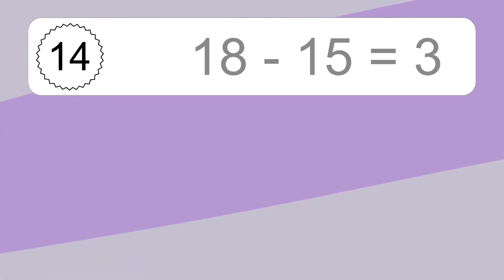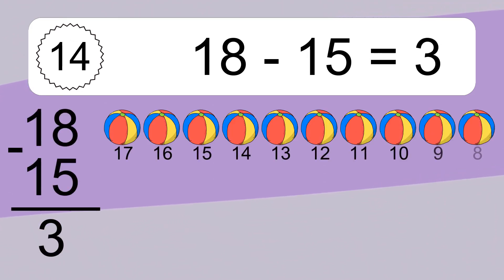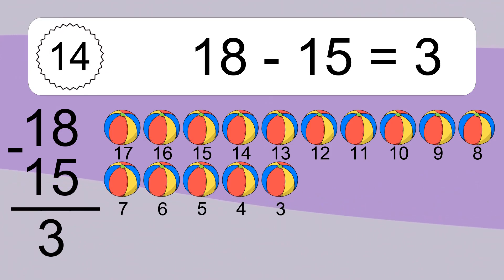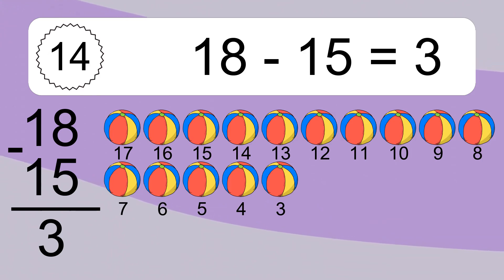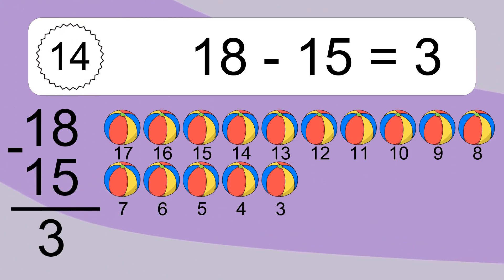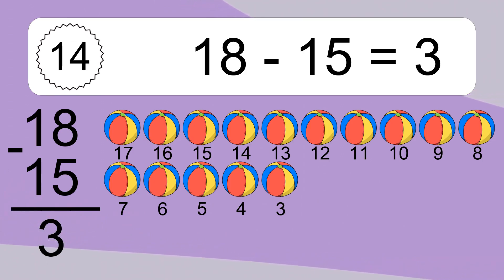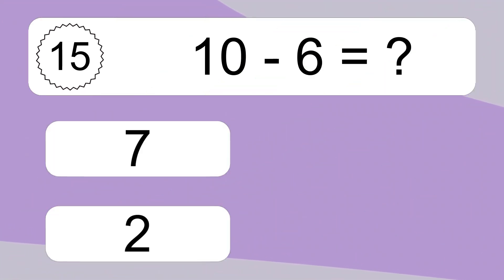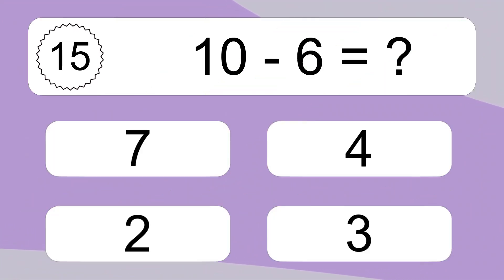18 minus 15 equals what? 18 minus 15 equals 3. Let's count it. 17, 16, 15, 14, 13, 12, 11, 10, 9, 8, 7, 6, 5, 4, 3.